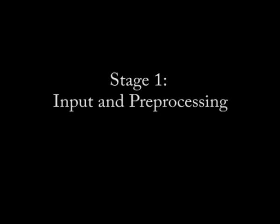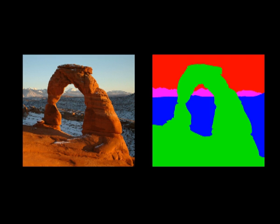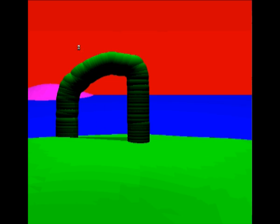We illustrate each stage with the arch example shown here. First, the user selects the image to add visual detail to the proxy model. It has a manually segmented guide, shown here. Then we create a simplified 3D geometric proxy.